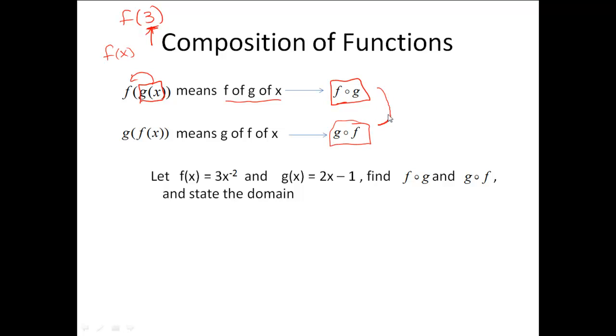Now, one thing to keep in mind, these two are usually not equal. So here's going to be our example. Let f of x equal 3 times x to the negative 2, and g of x be 2x minus 1. Find f of g and g of f and state the domain.